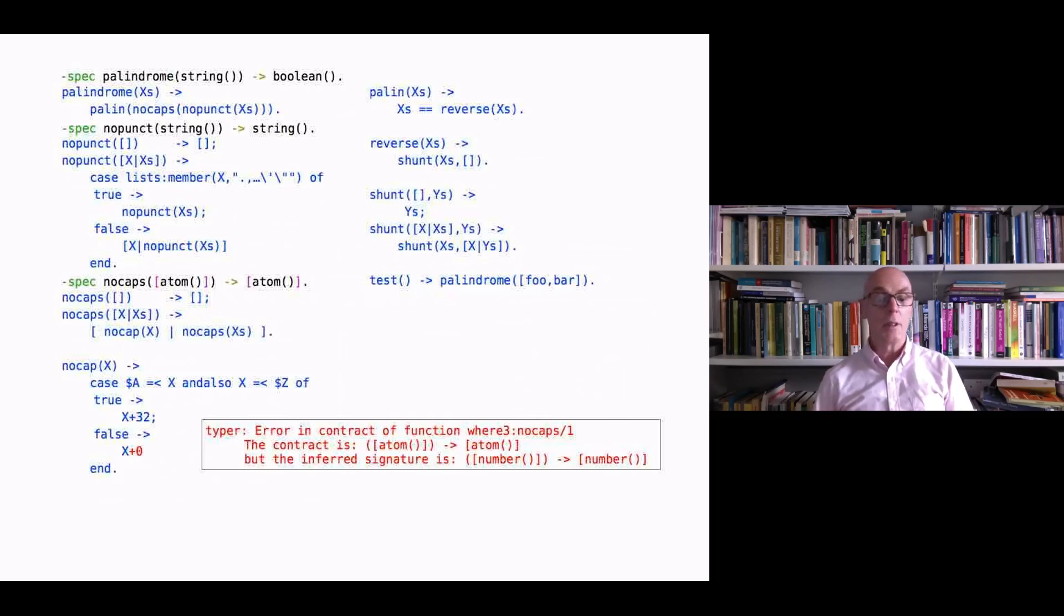Typer has managed to infer that no_cap takes numbers to numbers, and so no_caps takes a list of numbers to a list of numbers. And that is not consistent with the contract of taking a list of atoms to a list of atoms. Okay so we have that error there, but only when we change to force x to be a number.